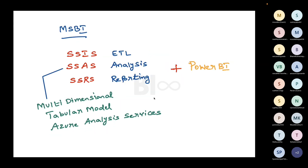We have MSBI — Microsoft Business Intelligence — which contains SSIS (ETL platform), SSAS (Analysis Services), and SSRS (Reporting Services). Apart from these, Power BI is a standalone environment with a separate tool for development and a completely different deployment. In SSAS we have two models: Multidimensional and Tabular. We are going to learn the Tabular model in these sessions. We also have a cloud version called Azure Analysis Services, which we'll learn as part of this training. Knowing the full MSBI plus Power BI stack is really good for opportunities and growth.